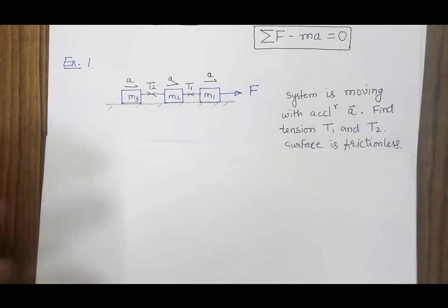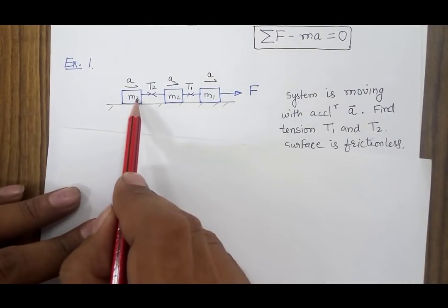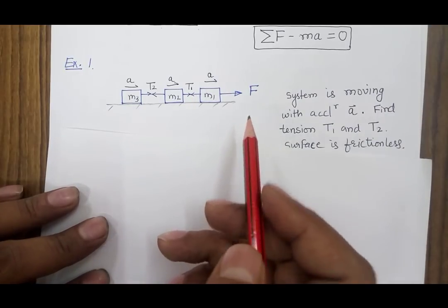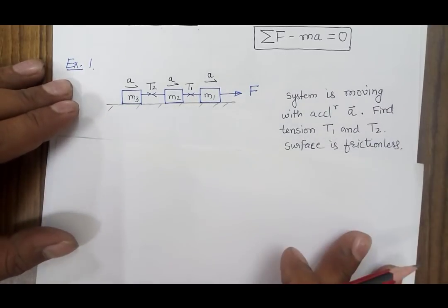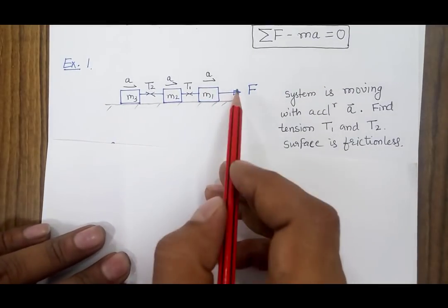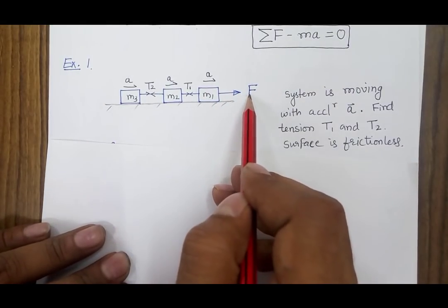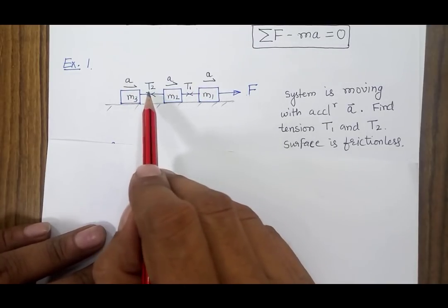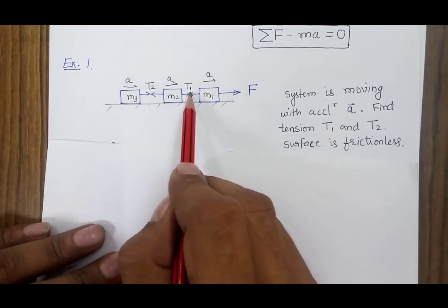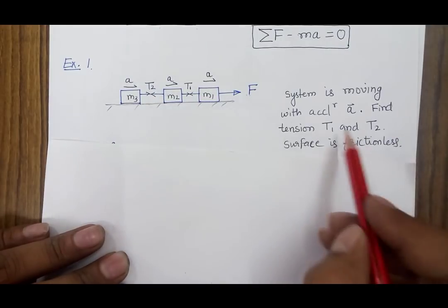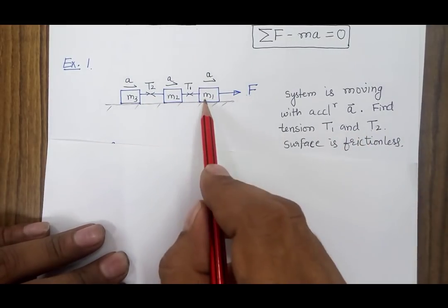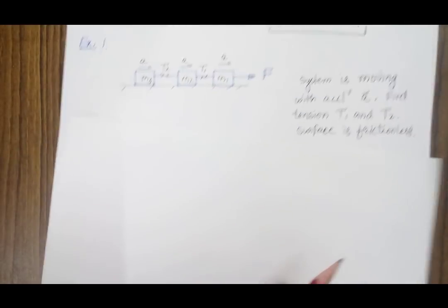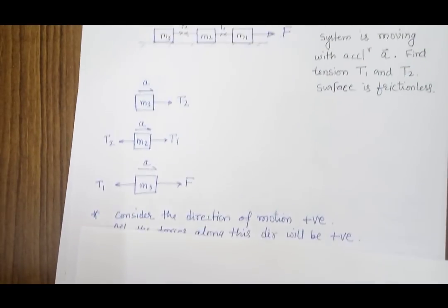Now let's take a simple example where we have three masses connected with strings. The two strings are inextensible, meaning the length of the string will not change due to force. A force F is applied and because of force F the system is moving with acceleration a. There will be tensions in the strings named T1 and T2, and we have to find the tension in terms of mass, acceleration, and force.